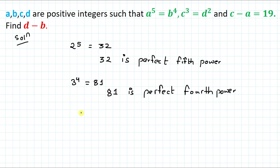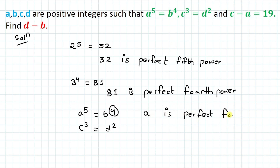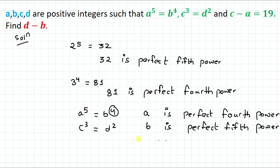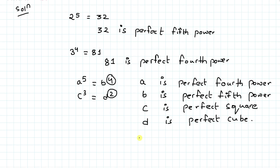Now, from the given equations a⁵ = b⁴ and c³ = d², we can deduce the nature of each variable. From a⁵ = b⁴, we can say that a is a perfect fourth power and b is a perfect fifth power. Similarly, from c³ = d², c is a perfect square and d is a perfect cube.